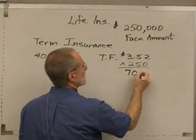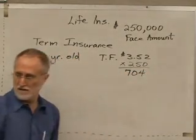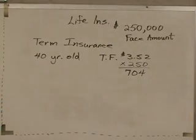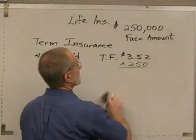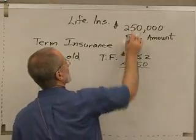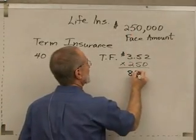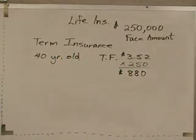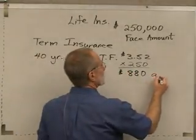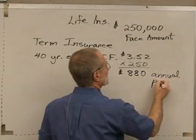I believe it comes out to $704 — actually, the correct answer is $880. Because I changed the face amount from the book. So $880 would be his annual premium — the amount he pays for this insurance.